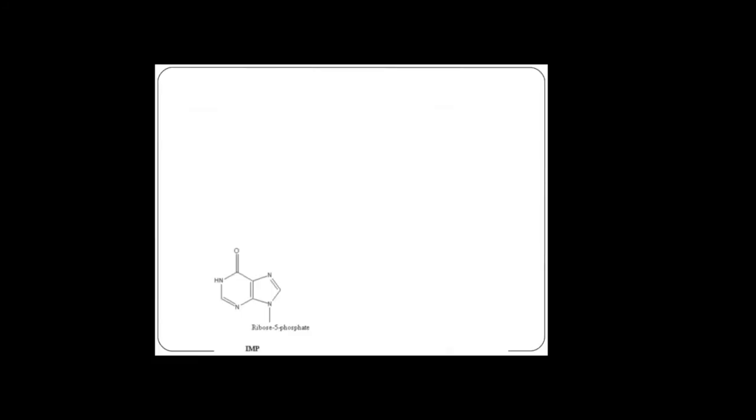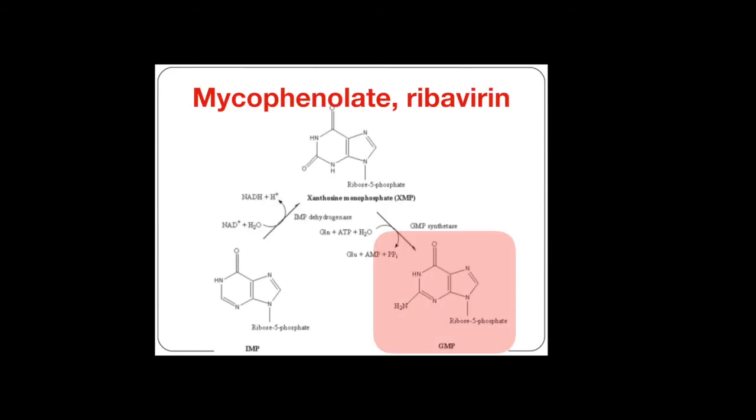And the last, mycophenolate and ribavirin can inhibit IMP's conversion into GMP. That's all for this lesson of Step 1 Review. We'll see you in the next video.